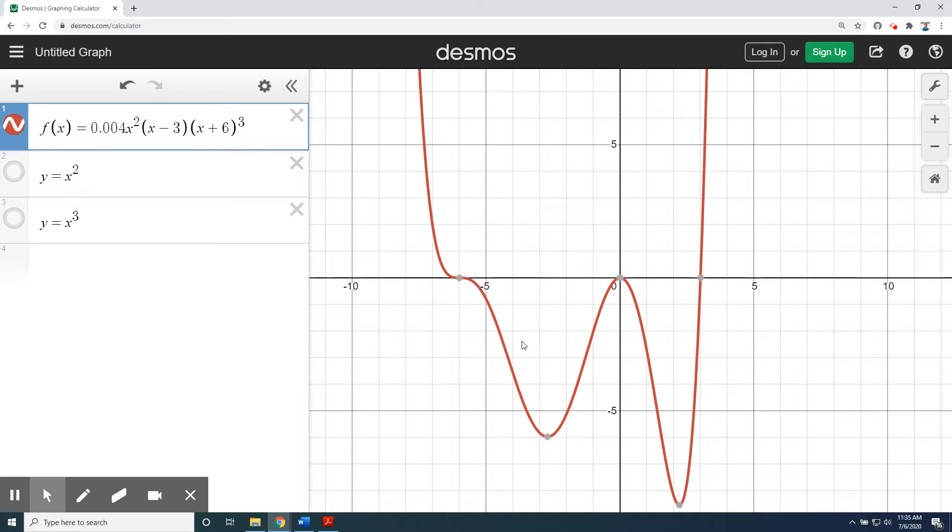Now, we already identified that there were three zeros, three roots, three x-intercepts. Remember, those are all just the same words for the same concepts. And we got the x values negative 6, 0, and 3. So if we look at this graph, we see that that is where the x-intercepts are located on our graph.